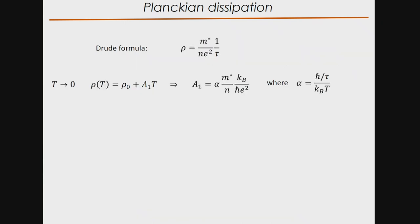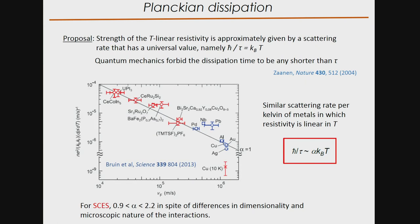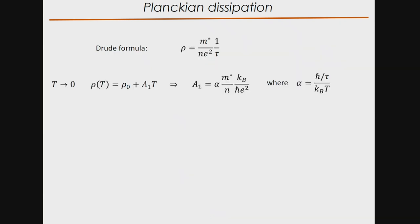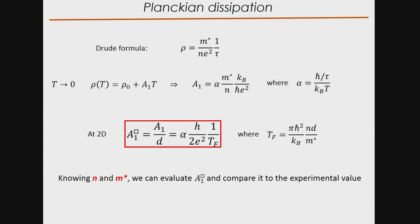For strongly correlated electron systems, in spite of differences in dimensionality or microscopic nature of the interaction, T-linear resistivity seems to be tied to the Planckian dissipation limit. What about cuprates? The situation is, in our opinion, simpler than for most of the systems shown — which are multi-band systems — because for overdoped cuprates we know the density of carriers. We assume that near T=0 the Drude formula works. Writing ρ = ρ₀ + A₁T and assuming Planckian dissipation with α = scattering rate over k_BT/ℏ, we can write the A₁ coefficient explicitly.